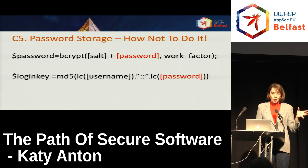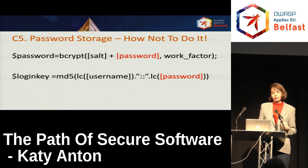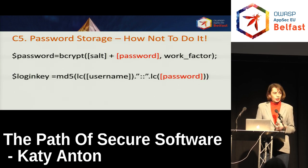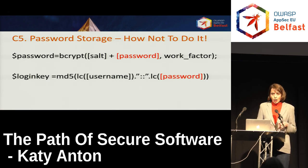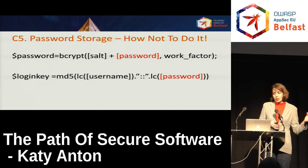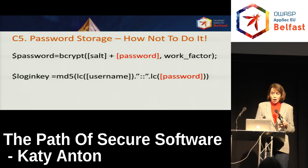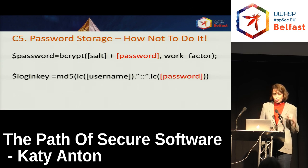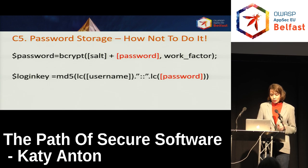This is an example from Ashley Madison, where they used a pretty good cryptographic algorithm — bcrypt — but then the same password users entered was also used to create a token stored using the deprecated MD5. Once this was understood, it was very easy for attackers to crack those passwords. About 11 million passwords were cracked and disclosed due to this flaw in their software.